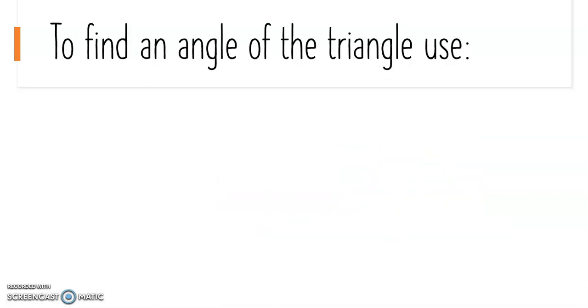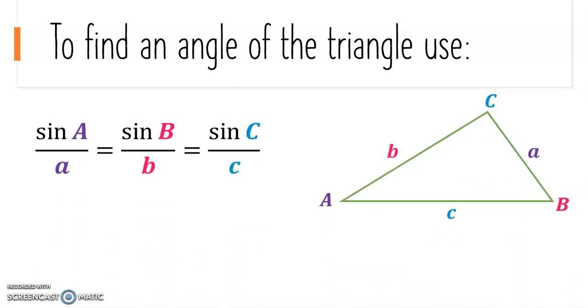To find an angle of the triangle, we use the sine rule: sine A over a equals sine B over b equals sine C over c. It's the same formula we used to find the side of a triangle, however, each ratio has been flipped.